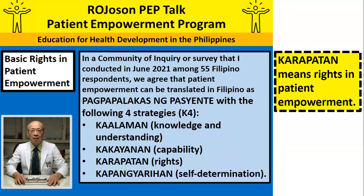In a community of inquiry or survey that I conducted in June 2021 among 55 Filipino respondents, we agreed that patient empowerment can be translated in Filipino as 'pagpapalakas ng pasyente' with the following four strategies or K4: Kaalaman (knowledge and understanding), Kakayanan (capability), Karapatan (rights), and Kapangyarihan (self-determination). Karapatan means rights in patient empowerment.